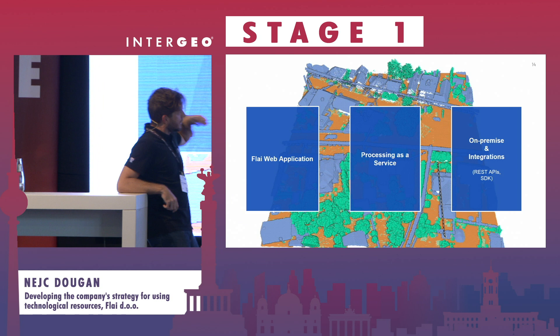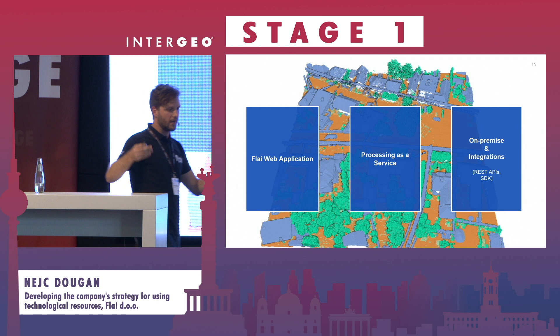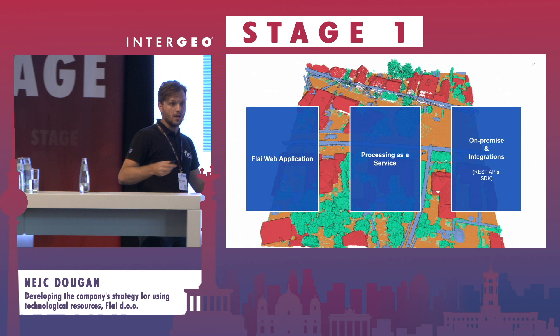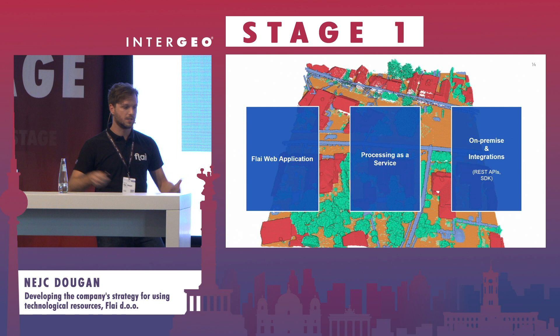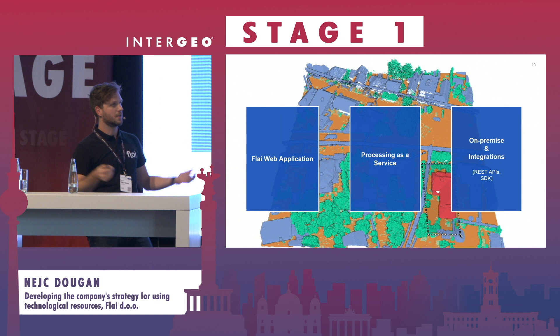All of those services and use cases can be delivered via three ways. One is through our web application. The second, for larger projects, is processing as a service where we do batch processing. The third is on-premise deployments and integrations via REST APIs, SDKs, or a command line interface.